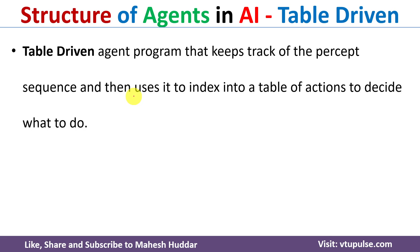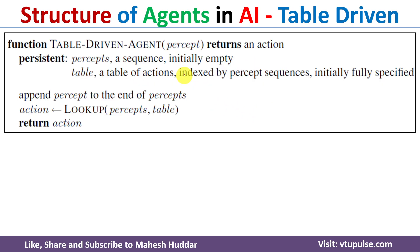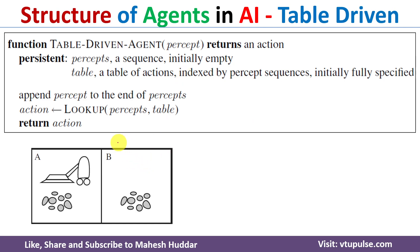Now we will discuss the structure of agents with the help of a simple agent known as the table-driven agent. The table-driven agent program keeps track of the current percept sequence and then uses an index into the table to search for an action, which is then returned. To understand the table-driven agent, we go back to the vacuum world example: there are two locations, either may be clean or dirty, and the robotic vacuum cleaner senses the environment — if dirty it sucks, if clean it moves to the other side.